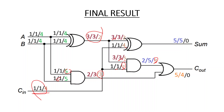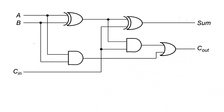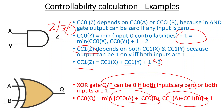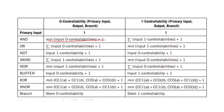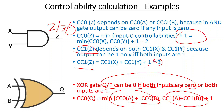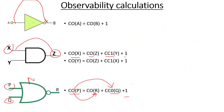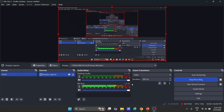So in this way we can calculate the observability and the controllability. First we calculate the controllability, and finally we calculate the observability — because to calculate observability we also need the controllability of the other input. To simplify this, we have a table: for the AND gate, CC0 = min(input CC0s)+1, and CC1 = sum of input CC1s + 1. We do not need to memorize these values — we just need to remember the logic to find them, because it will be impossible to remember all three values and you will get confused. The logic is very simple, so you can easily calculate from it. Thank you, please like and share the video and subscribe to the channel.